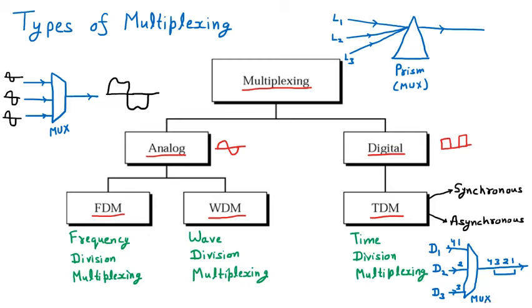We will also discuss all these multiplexing techniques in complete detail. This was the basic overview of the types of multiplexing — FDM, WDM, and TDM — and we will cover each one in depth.